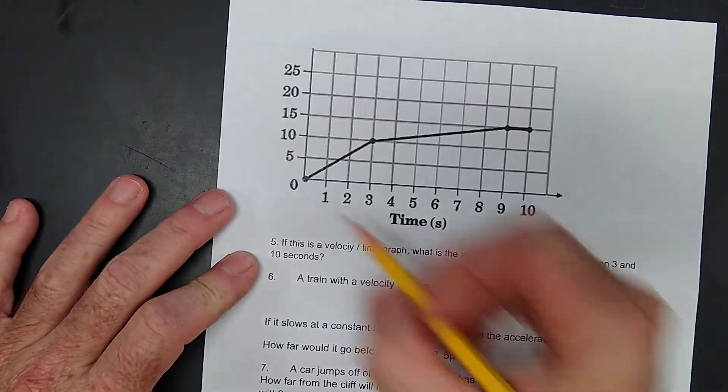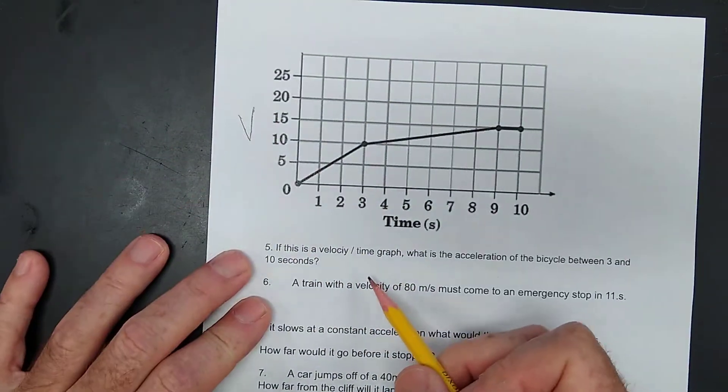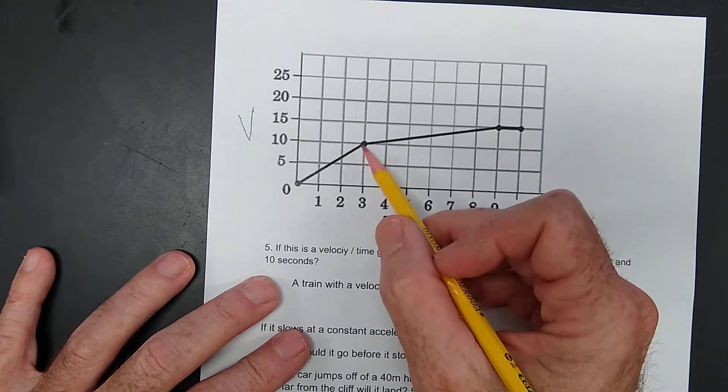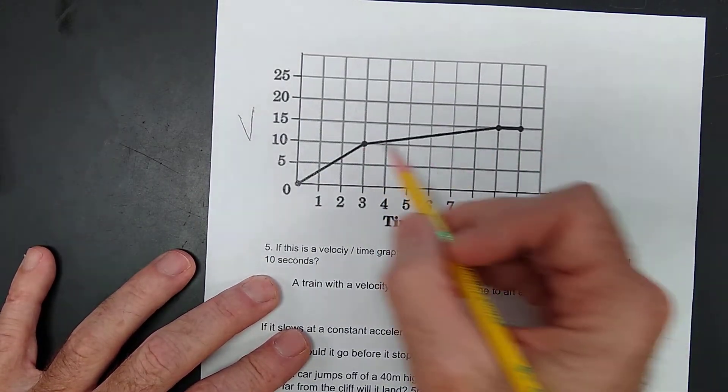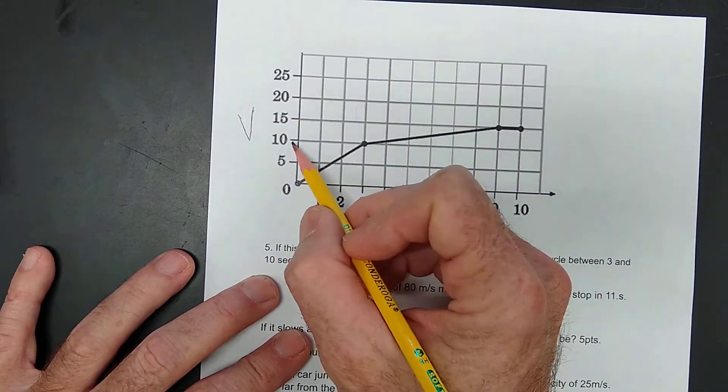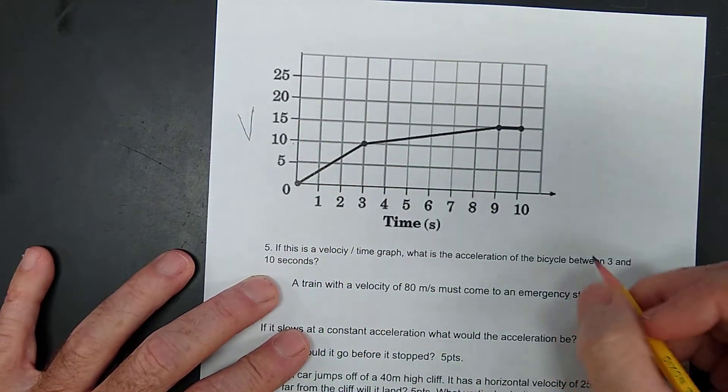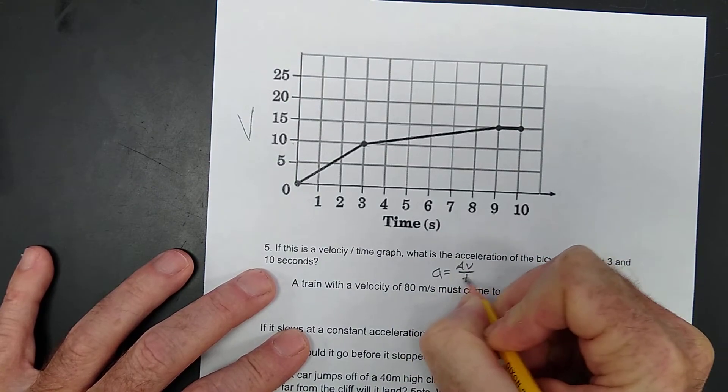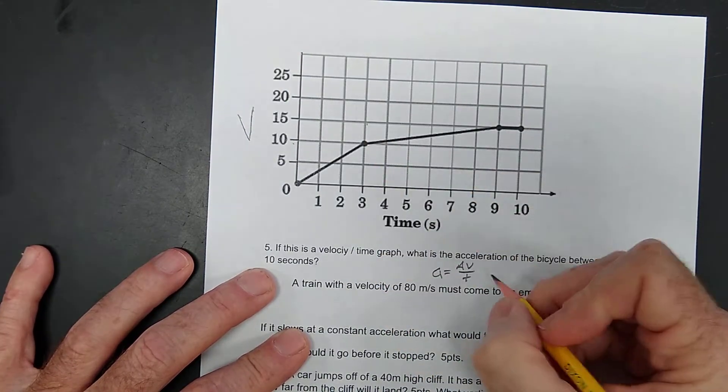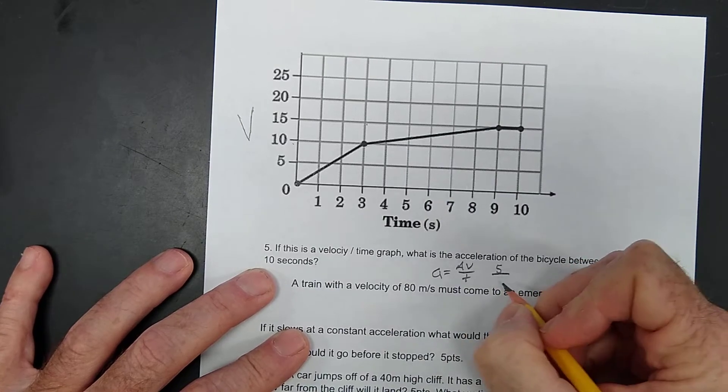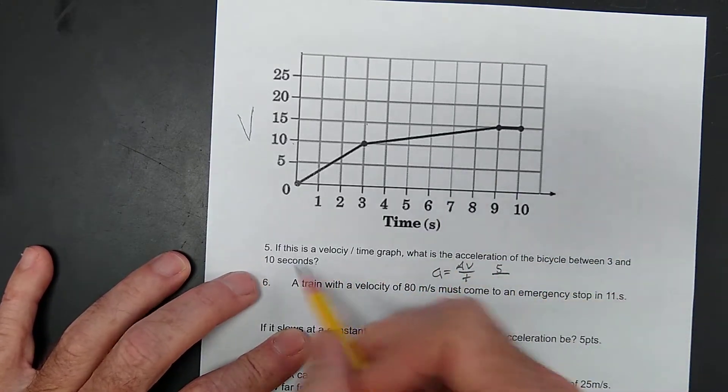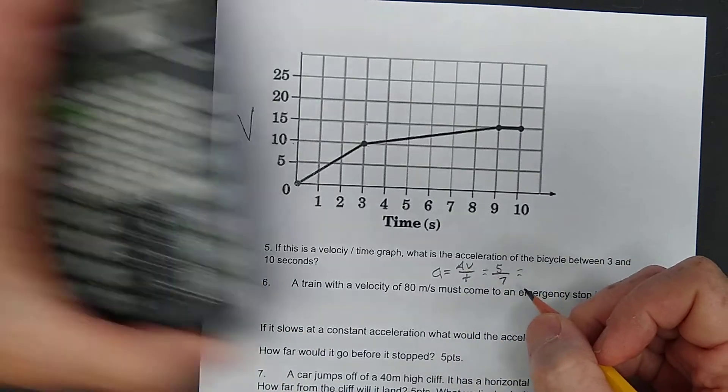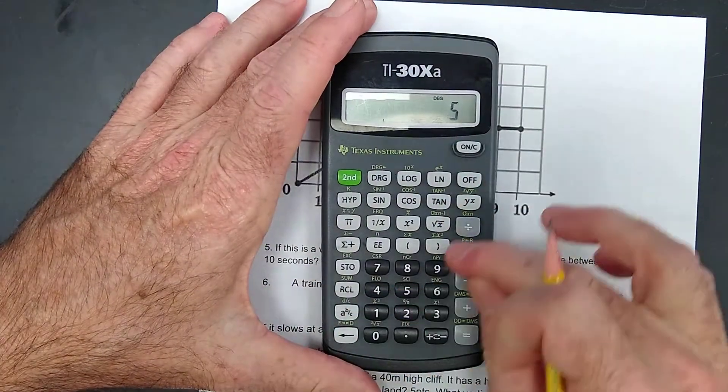Keep rolling. If this is a velocity over time graph, what is the acceleration of the bicycle between 3 and 10 seconds? So, from 3 to 10, we increase from 10 to 15. So, the change in velocity, acceleration is equal to change in velocity over time. The velocity goes up by 5 in how much time? From 3 to 10 seconds and 7 seconds. So, the acceleration was 5 divided by 7.